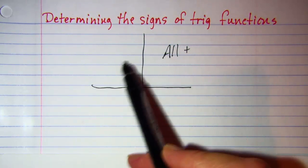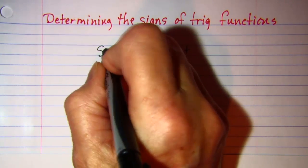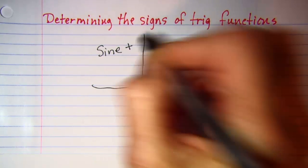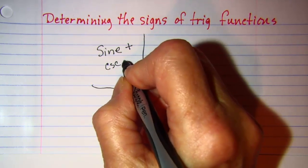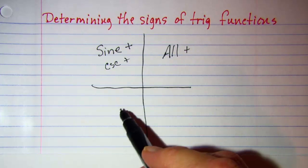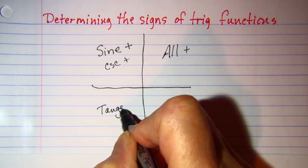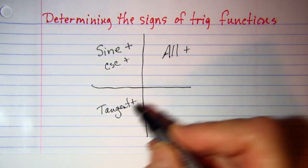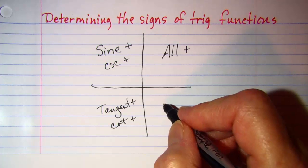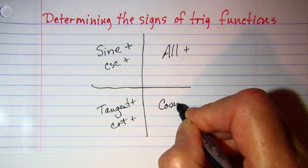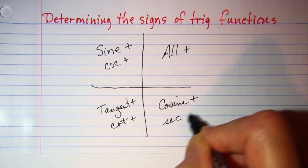Now if we move counterclockwise, we see that in quadrant two the sine is positive and of course the reciprocal which is cosecant. And then in quadrant three the tangent is positive and the reciprocal cotangent is positive. In quadrant four the cosine is positive and the reciprocal which is secant is positive.